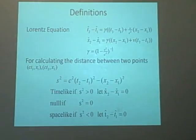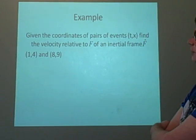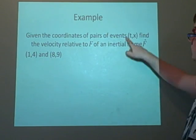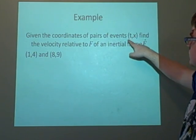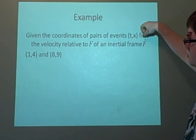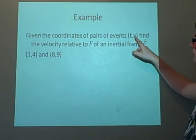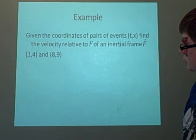We've got three examples coming up, one for each case. We're given coordinates of event pairs in the form (t, x), not (ct, x), so we're setting c equal to 1. We're going to find the velocity relative to frame f of an inertial frame f-hat. Setting c = 1 makes it easier, because if c is 3×10⁸, it gets quite difficult.